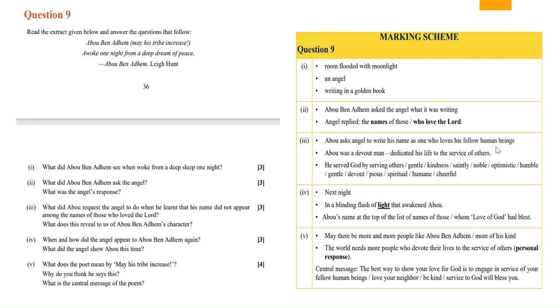So Abu was a devout man and he dedicated his life to the service of others. This reveals about his character. He served God by serving others. He was gentle, his kindness saintly, noble, optimistic, humble, gentle, devout, pious, spiritual, humane, cheerful. If you used any of these words in your answer, the answer is correct.